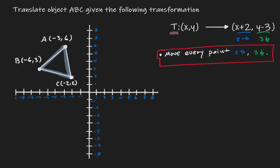So let's start with point C. C is defined as a coordinate point. So if we move it two units to the right and three down, then our image C' will be located at its new coordinate. Now let's concentrate on point B. B is defined as its coordinate point. So if we move it two units to the right and three units down, our location B' is going to be located at its new coordinate. Now let's concentrate on A. A has been defined as its coordinate point. So if we move it two units to the right and three units down, our image A' is going to be located at its new coordinate. Now let's create our new triangle.